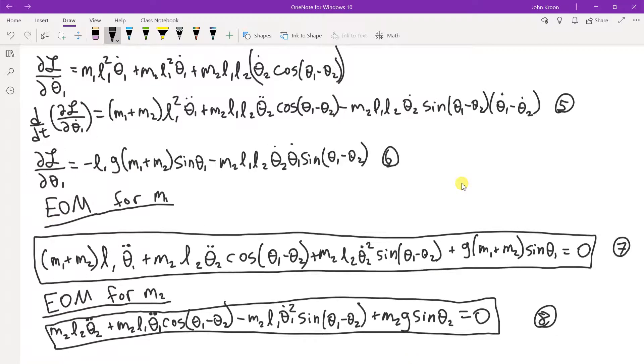All right, so here are the equations of motion for M1 and M2. I have done all the algebra and simplifications and made it nice and neat and tied it in a little bow for you. And remember I told you N equals 2, capital N equals 2. And so we have an equation of motion for both theta 1 and for theta 2.